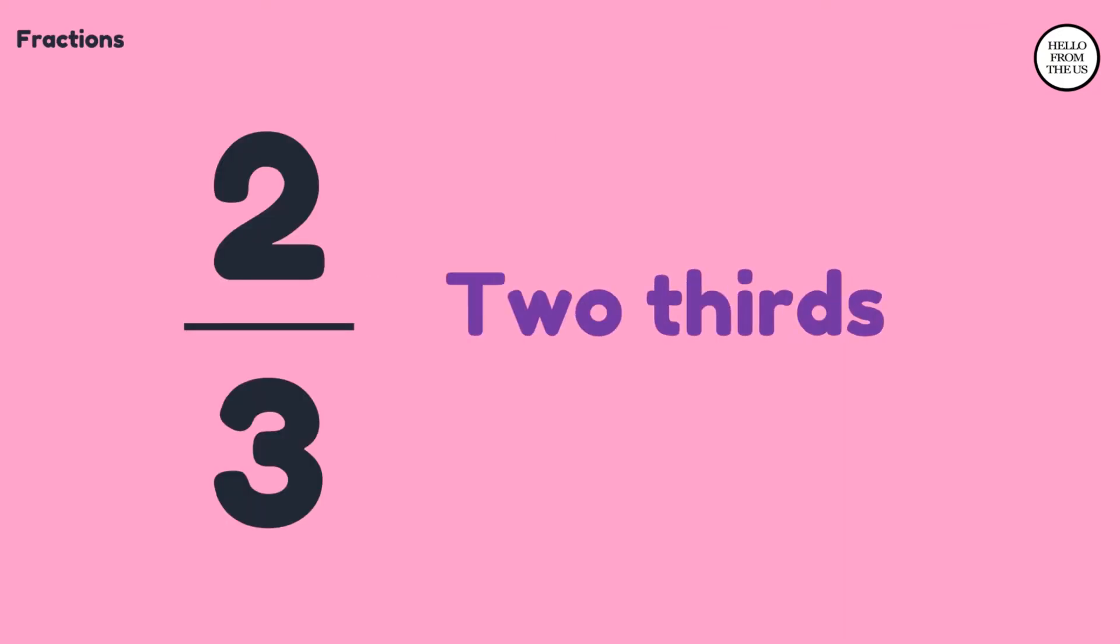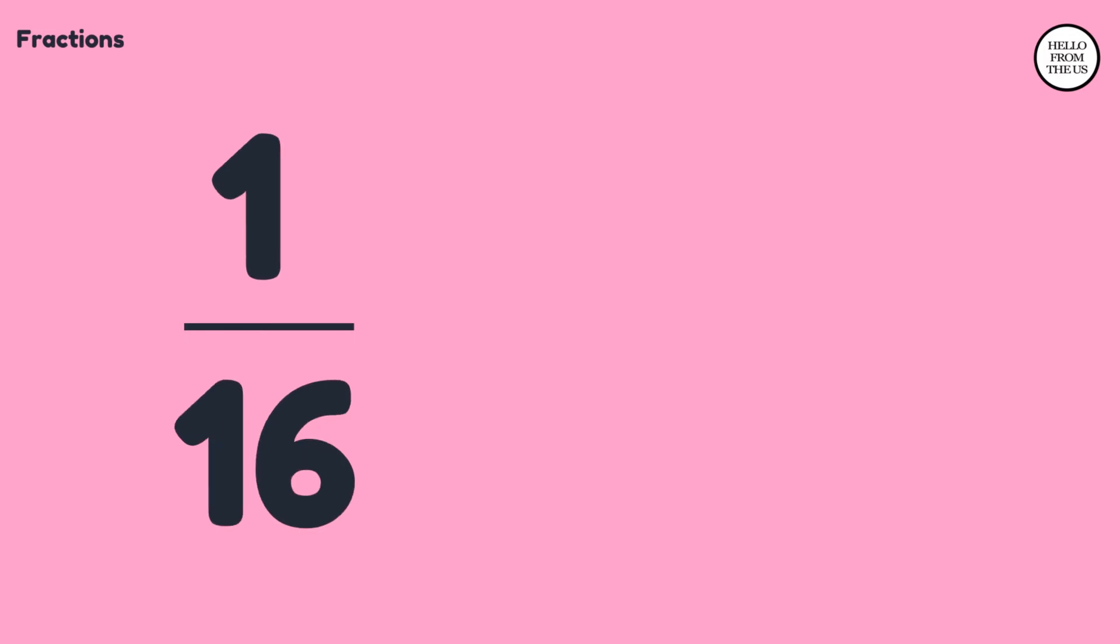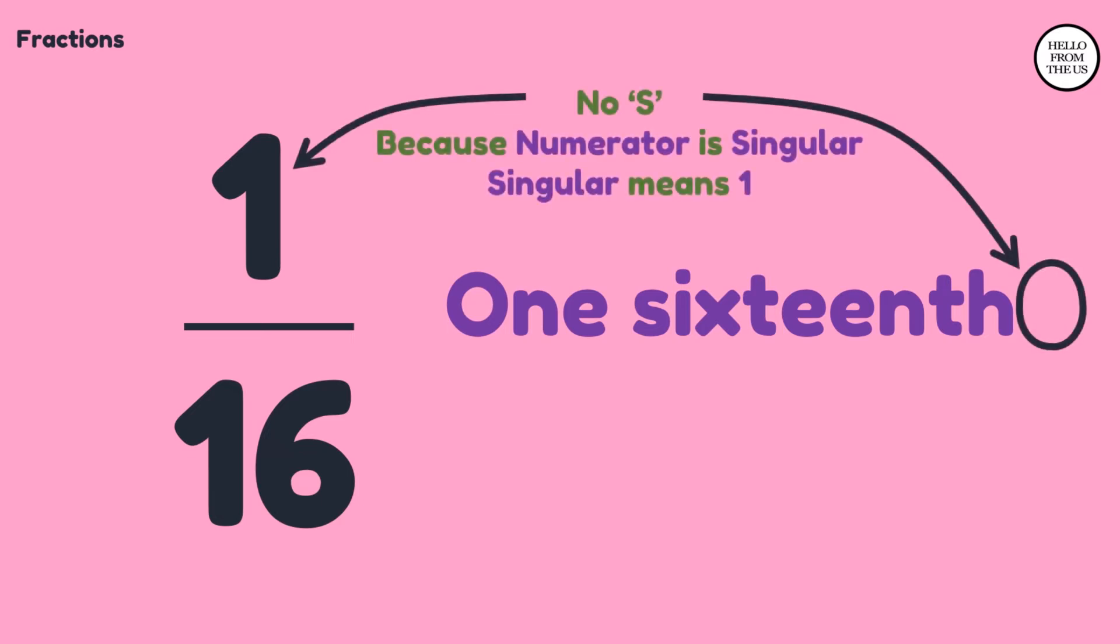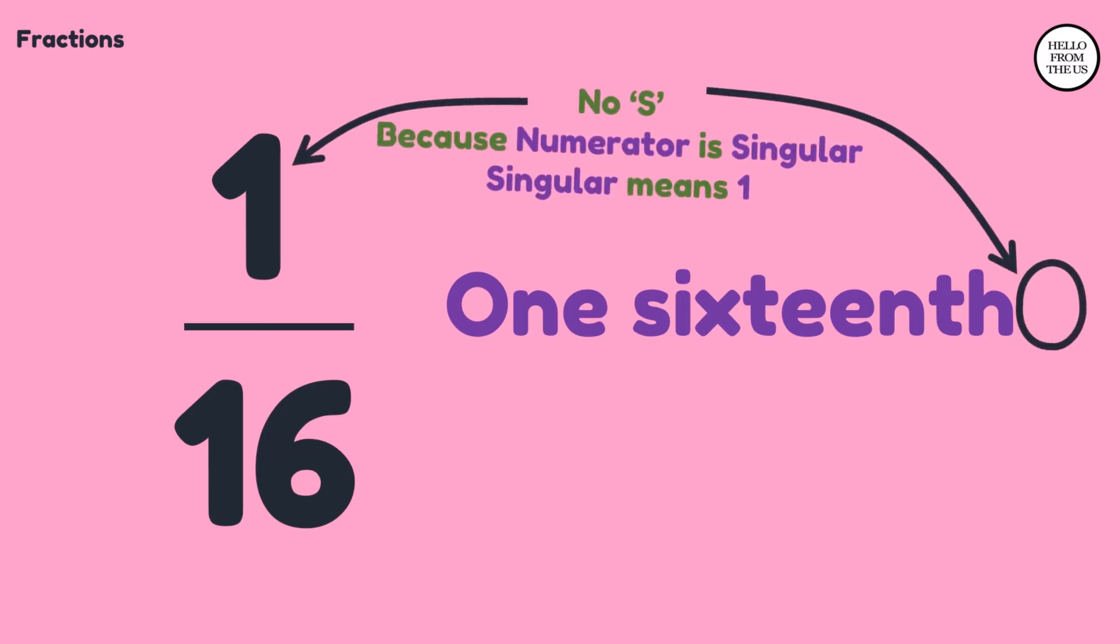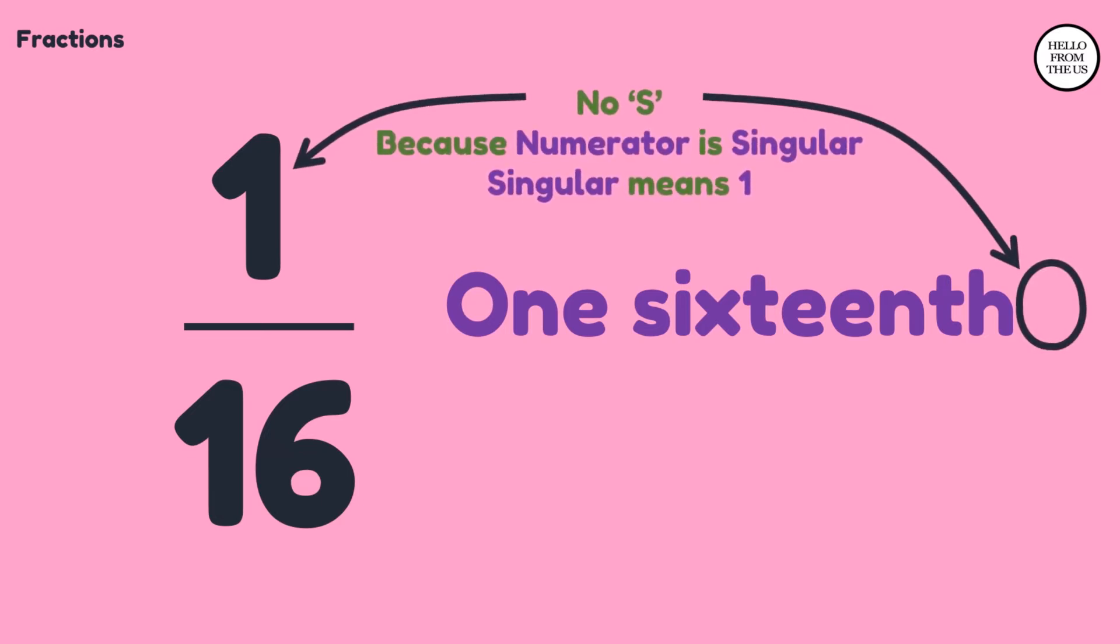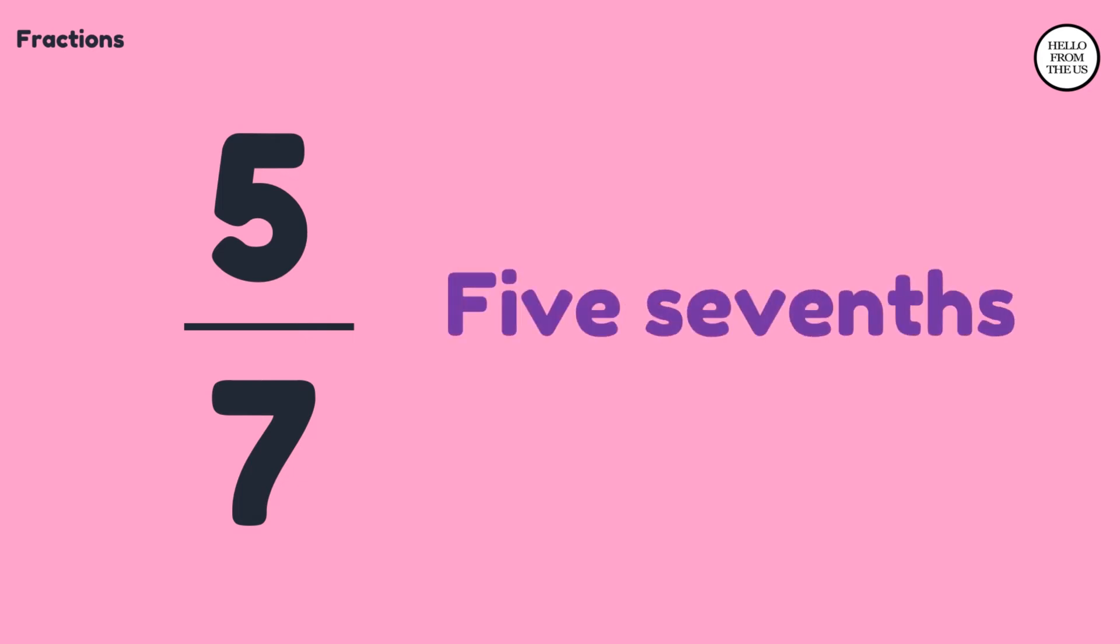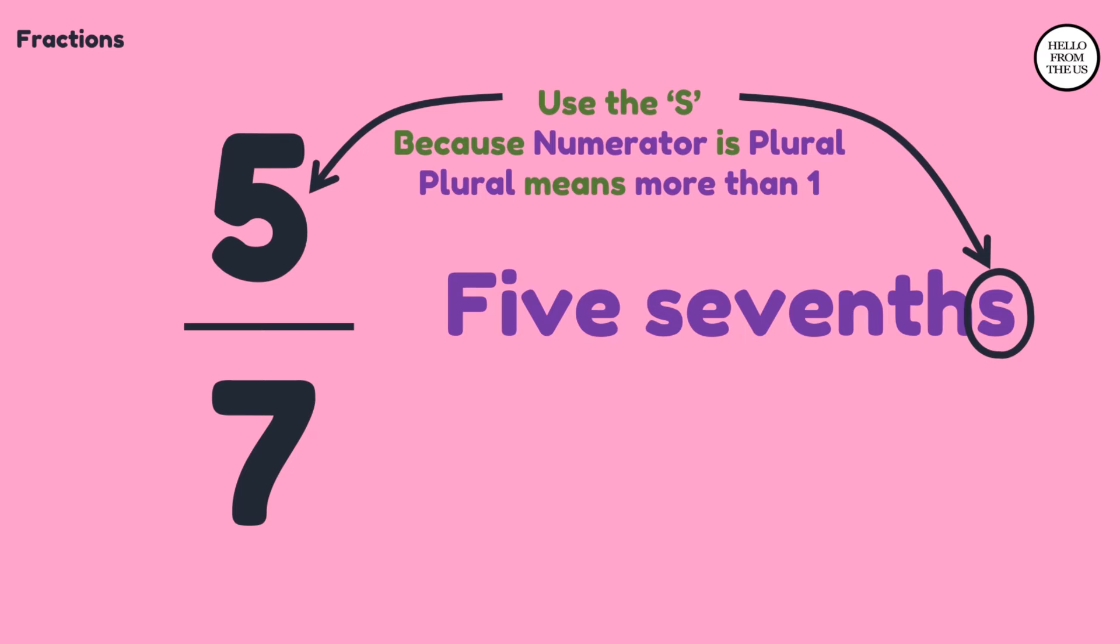Two-thirds. Good. Next, one sixteenth. There is no s at the end because one is singular. Then we have five sevenths. Make sure you use the s at the end of all words that are plural.